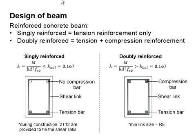As for the doubly reinforced beam, the compression bar takes part in resisting compressive load. The K should be greater than 0.167. When the compressive reinforcement bar is required, the minimum bar link provided should be at least R8.